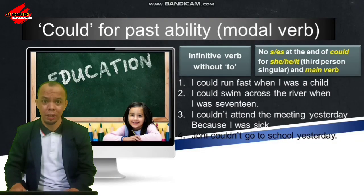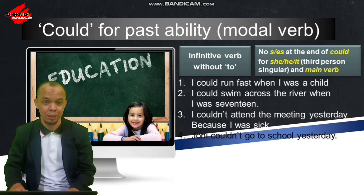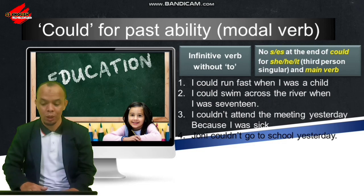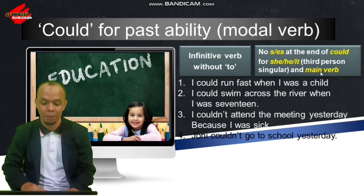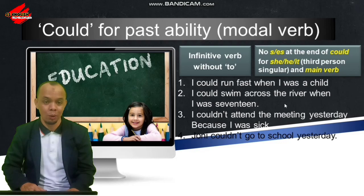Kita masuk pada bagian kedua, yaitu how to talk about past ability — bagaimana berbicara tentang kemampuan pada masa yang lampau. Kita bisa menggunakan 'could' for past ability. 'Could' juga termasuk modal verb dengan peraturan yang sama dengan 'can': walaupun subjeknya third person singular (she, he, it), kita tidak menggunakan akhiran s atau es setelah 'could' maupun setelah kata kerja utamanya. Setelah 'could', kita juga menggunakan infinitive without to.